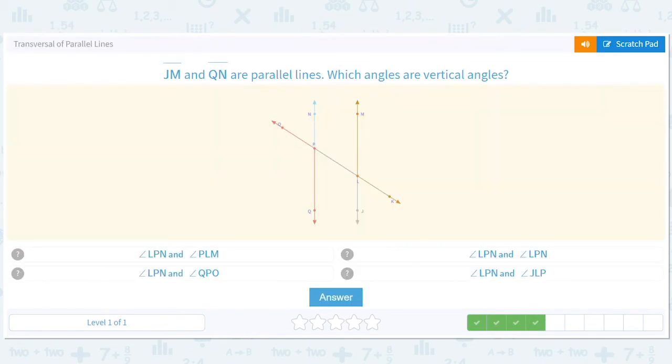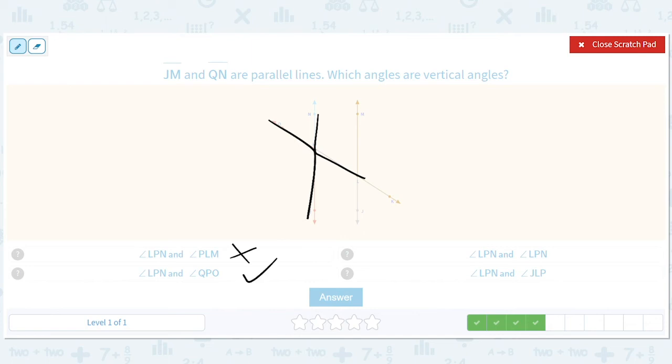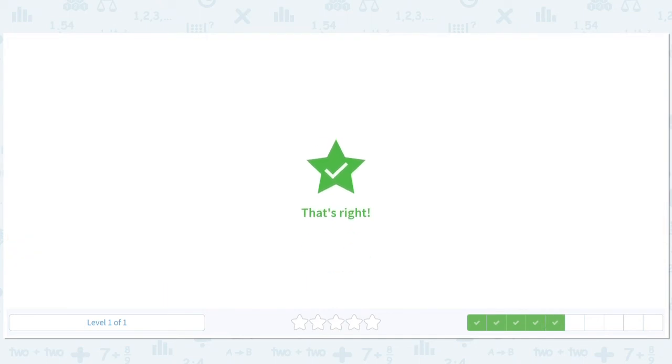Which angles are vertical angles? LPN and PLM. So LPN and PLM. No. LPN and QPO. Yes. They're like on the opposite sides there. LPN and LPN. No. LPN and JLP. No. So these.